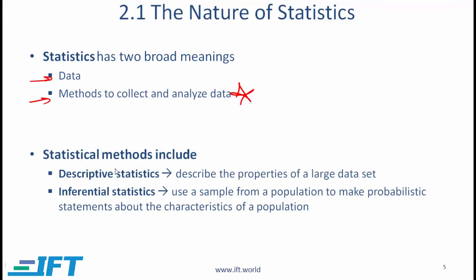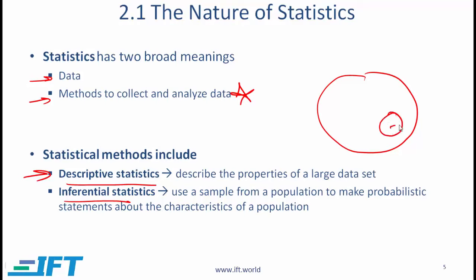When we talk about statistical methods, there are two subcategories. Descriptive statistics essentially describe the properties of a large data set. The mean or average return of 700 stocks in a given stock market, for example, would be a descriptive statistic. This reading is going to focus on descriptive statistics. Inferential statistics use a sample from a population to make a probabilistic statement about the characteristics of a population. Those techniques are referred to as inferential statistics and will be covered in a later reading.